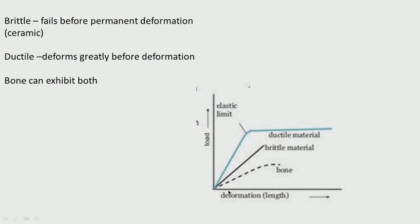This picture shows a ductile material and a brittle material, and the bone. Brittle material fails before permanent deformation — like ceramic. Ductile material deforms greatly before failure. Bone can exhibit both. A brittle material will not show any ductility — it will just fail.